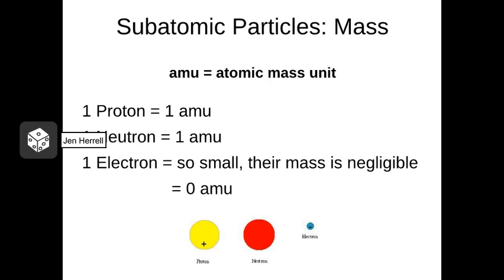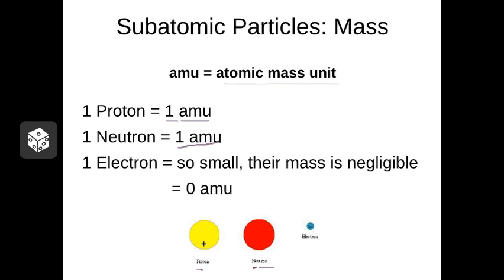Let's discuss the relative mass of these subatomic particles. Subatomic particles are so tiny that we can't really measure them in grams, so they have their own mass unit known as an atomic mass unit, or AMU. The mass of one proton is approximately one AMU, and so is the mass of a neutron. Electrons are so tiny that technically it's fine to say they have zero AMUs. In reality, an electron's mass comes out to something like 0.005 AMUs, but the mass is so tiny that we consider it negligible and it often gets rounded to zero AMUs.